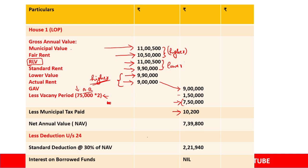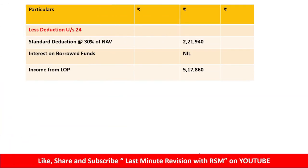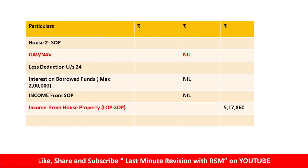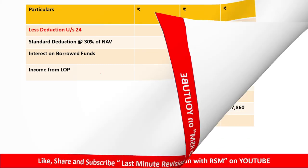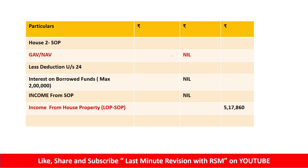Then Municipal Taxes paid are deducted, giving ₹7,39,800. Then deductions: 30% on ₹7,39,800, and interest on borrowed funds (nil). Final answer for LOP income is ₹5,17,860. For the self-occupied property (SOP), there is no interest deduction, so it is ₹0. LOP minus SOP gives ₹5,17,860. No Chapter 6 deductions, so GTI is calculated accordingly.